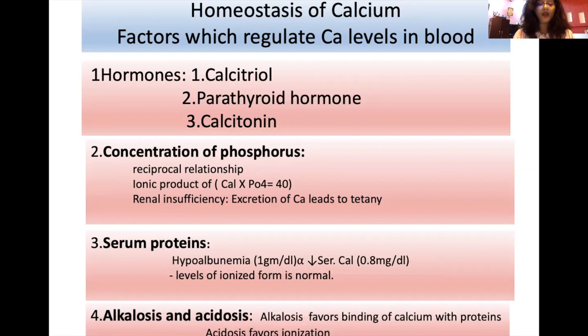Alkalosis and acidosis also affect calcium: alkalosis favors binding of calcium with protein, while acidosis favors ionization — making calcium available in its active ionic form.